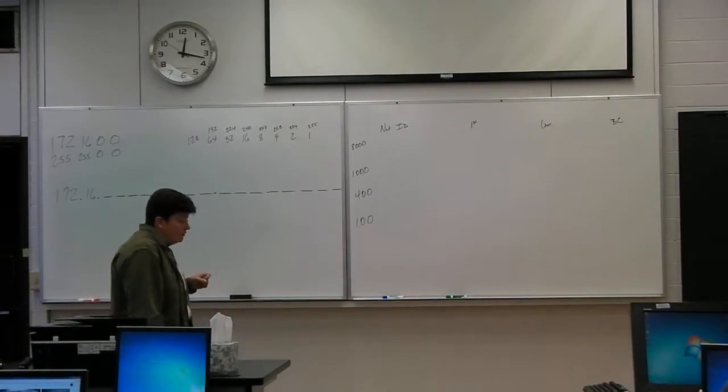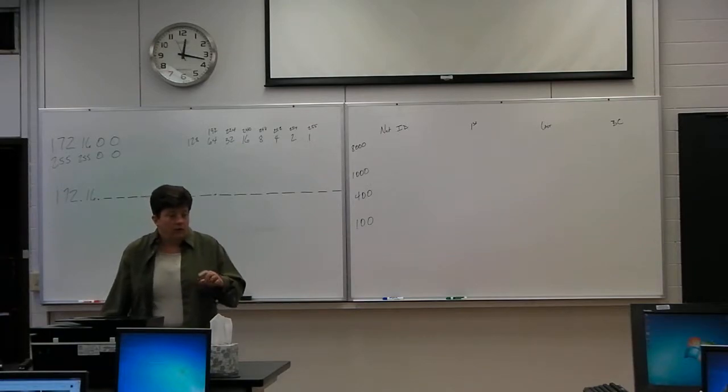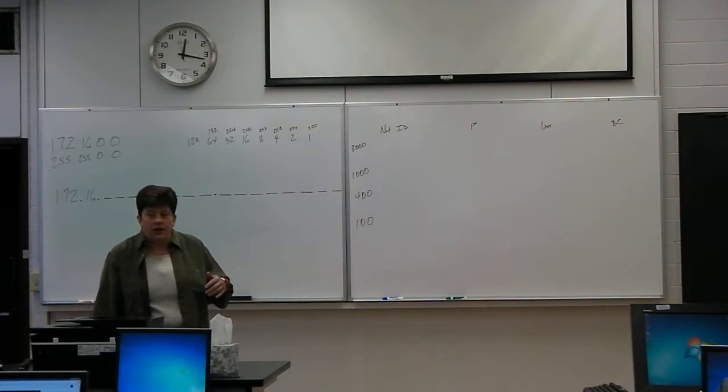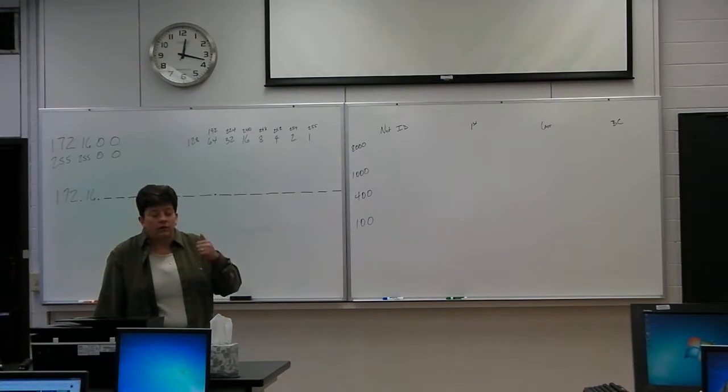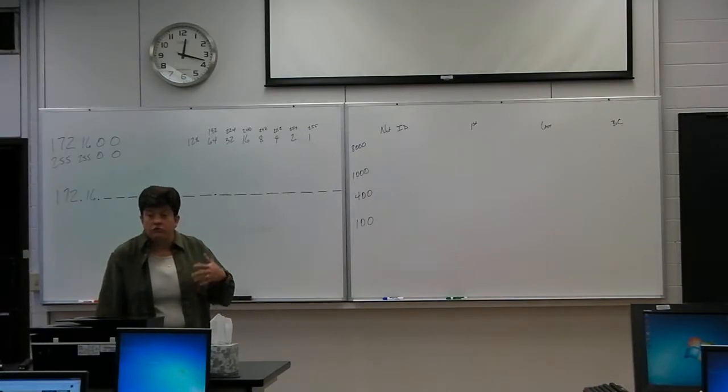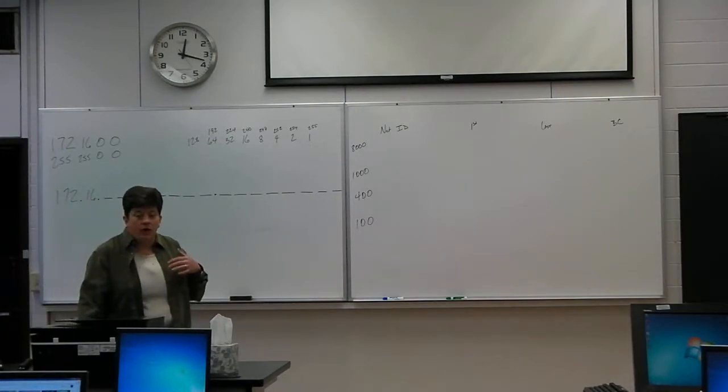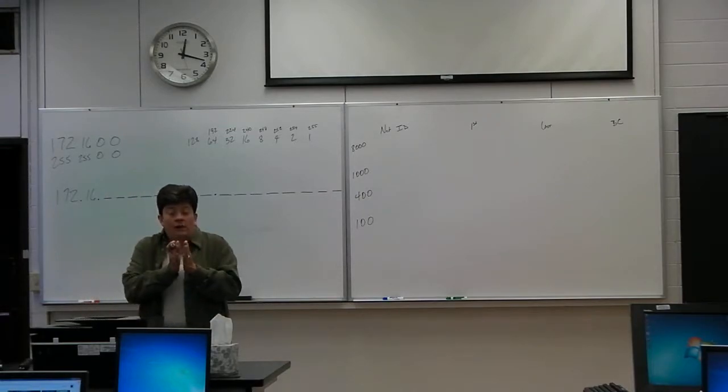Okay, today we're going to cover Variable Length Subnet Masking or VLSM. When we talked about classic subnetting, I told you what we accomplished there was setting up networks, either a prescribed number of networks or a prescribed number of hosts per network. So somebody would have said I need 20 networks and we can do that, or they would have said I want whatever number of networks I get but I want 4,000 hosts per network and we did that. It is way more common to have a situation where I don't have all of my networks need to be the same number of hosts.